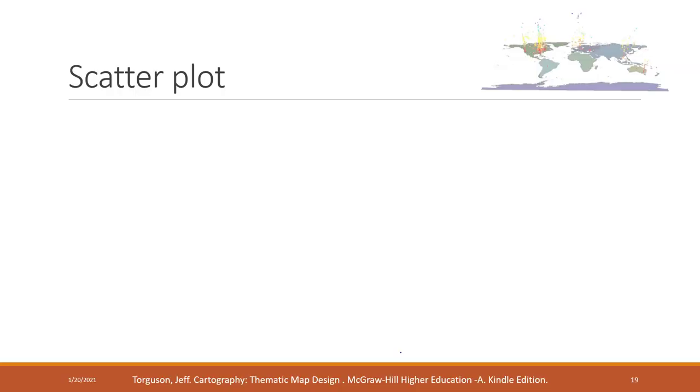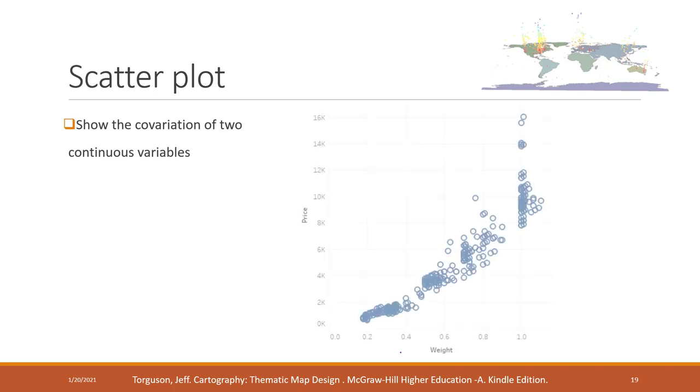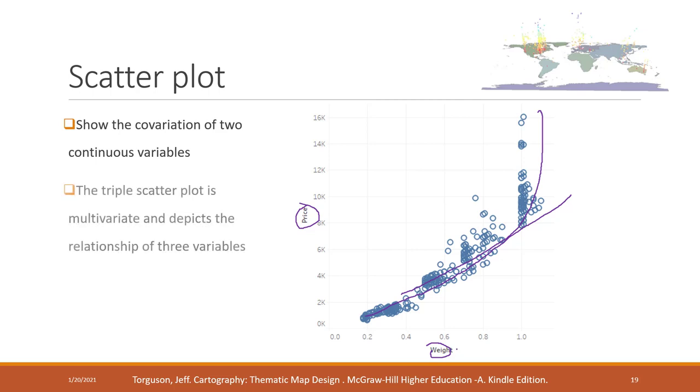Another very popular visualization graph is called scatter plot. Scatter plot is used to show the relationship of two continuous variables. For example, here we see the relationship between the weight and price of the diamond and it is very clear that we see a positive relationship and a positive nonlinear relationship. We know that when the weight of diamond gets bigger, the price will also be higher.